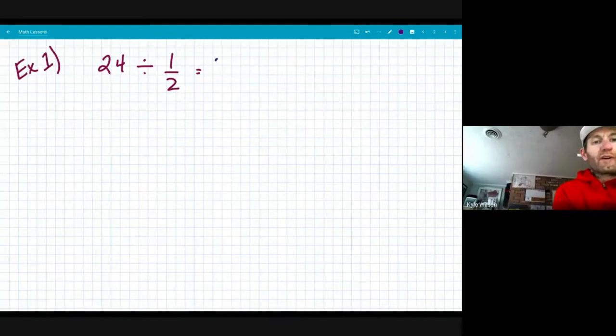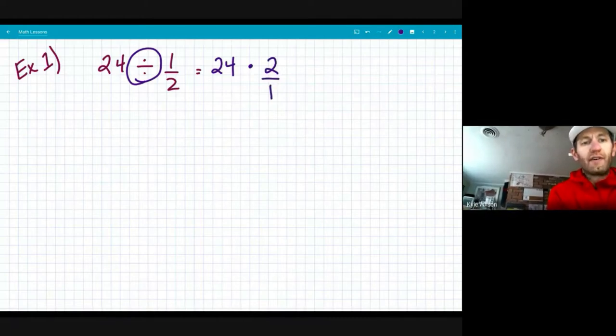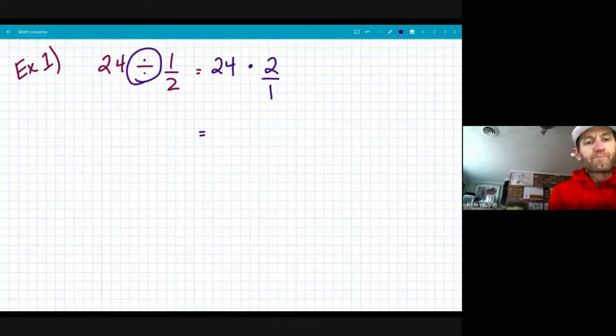So I'm going to rewrite it and keep 24 the way it is and multiply by the reciprocal. So I'm going to change that operation to multiplication and then take the reciprocal of one half, which is two over one. When I go ahead and solve this, 24 times 2 is 48.